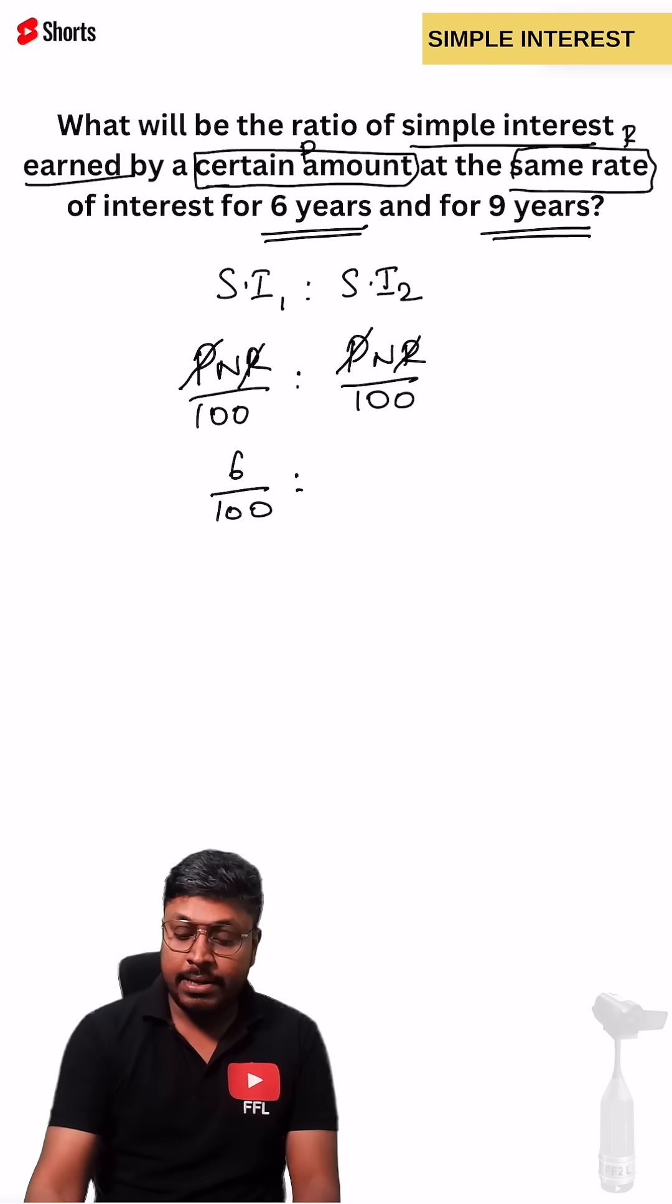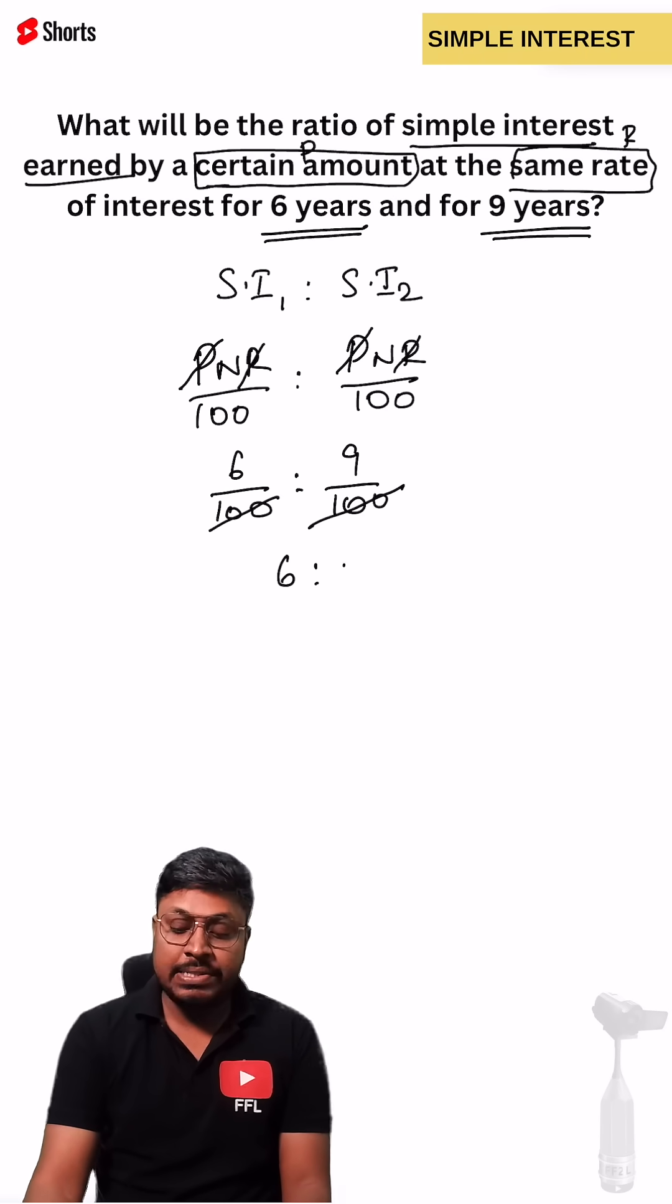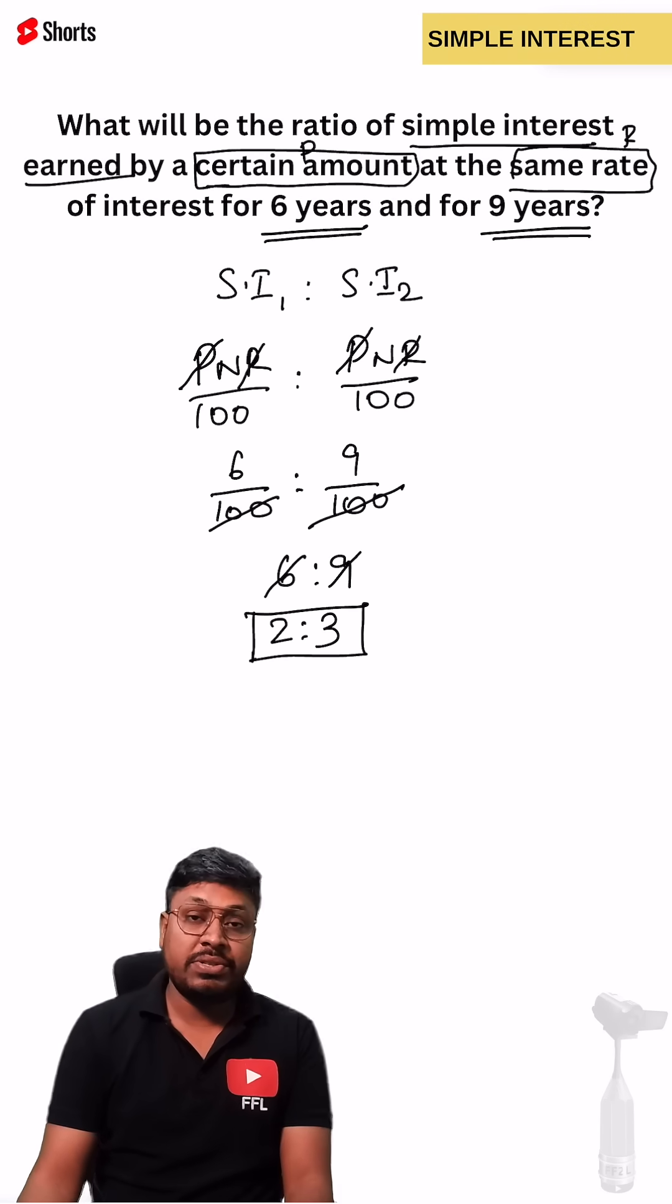6 divided by 100 is to 9 divided by 100. We can cancel 100 and 100. 6 is to 9. We can cancel it on the 3 table, 2 is to 3. The ratio of simple interest is 2 is to 3.